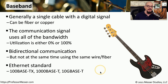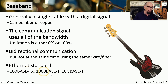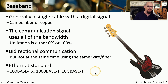It's very common to see baseband used on wired Ethernet connections. For example, the 100 megabit 100BaseTX, the gigabit 1000BaseT, and the 10 gigabit 10GBaseT are all Ethernet standards using baseband. The term 'base' in the name refers directly to that baseband communication.